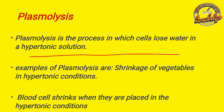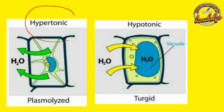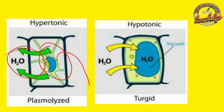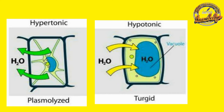Plasmolysis is the process of water loss. This means water loss occurs in a hypertonic solution. The hypertonic solution causes water loss. Plasmolysis involves a diagram of the hypertonic solution resulting in water loss. It is the process of hypertonic solution, and it occurs in Plasmolysis.